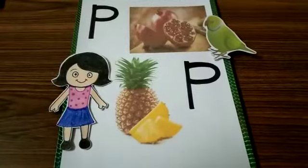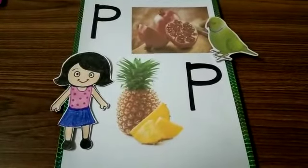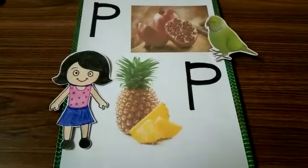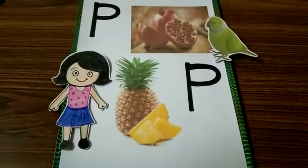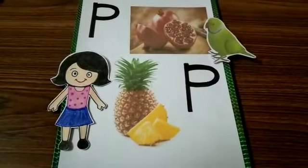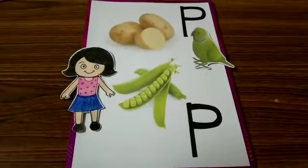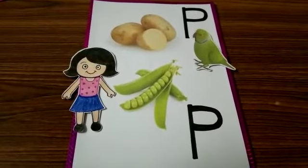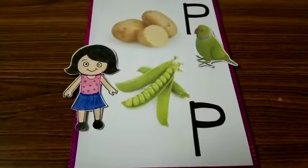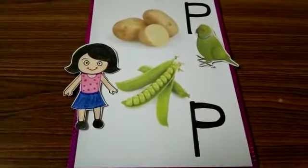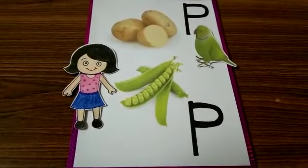It said, P P Polly take P P pomegranate and P P pineapple from the fruit seller. Now P P Polly take P P potatoes and P P peas from the vegetable seller.